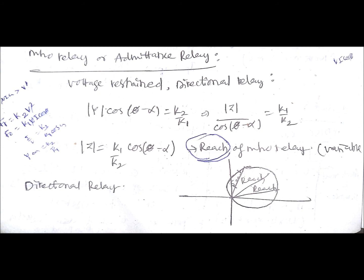The reach of the mho relay varies — if you observe the characteristics, the reach values from the origin of the coordinate system vary for different values of α. Unlike the reactance relay where α is fixed at 90°, here α is not fixed, making reach a variable quantity. However, the characteristics lie completely towards the positive values, which is why the mho relay is a directional relay.